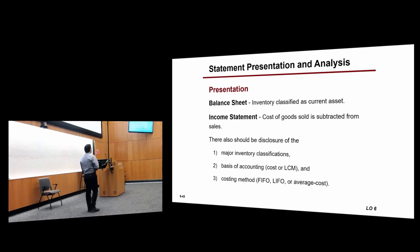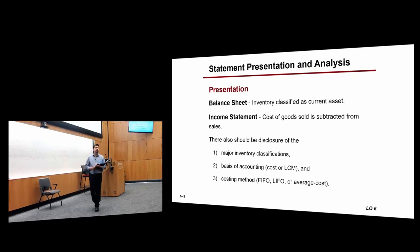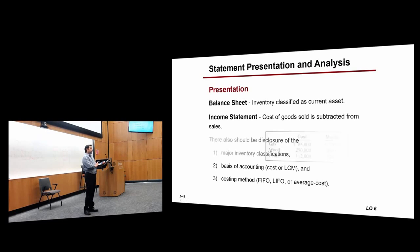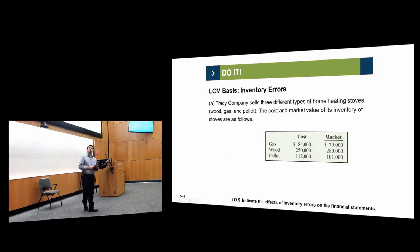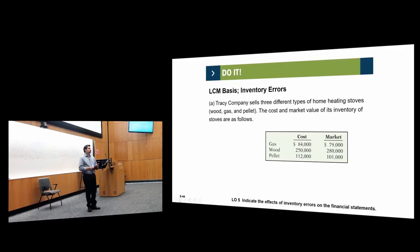We also talked about the fact that the company must disclose what kind of inventory they have, what method they use, and whether they use cost or lower of cost or market. We also learned LCM — lower of cost or market. Which number is lower?